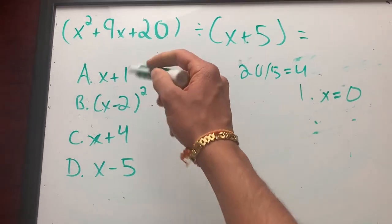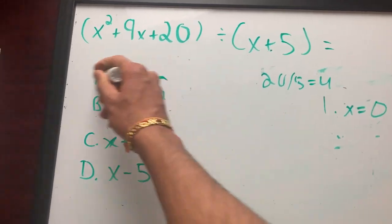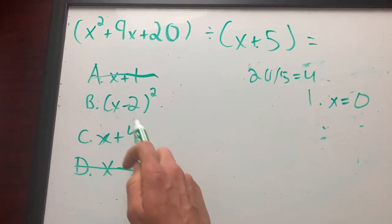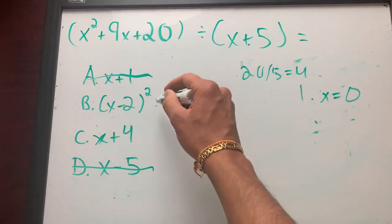So let me plug in x equals zero into these. If I plug in zero, I get one. That's gone. If I plug in zero, I get negative five. If I plug in zero, I get four. If I plug in zero, I get four. So these two check out.